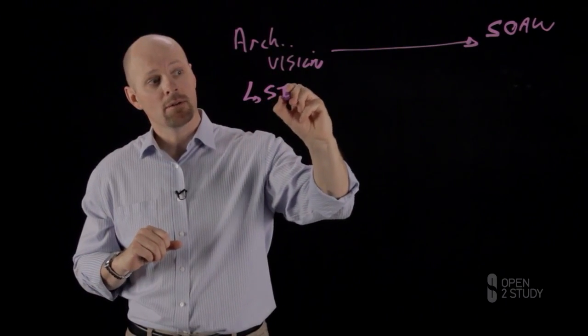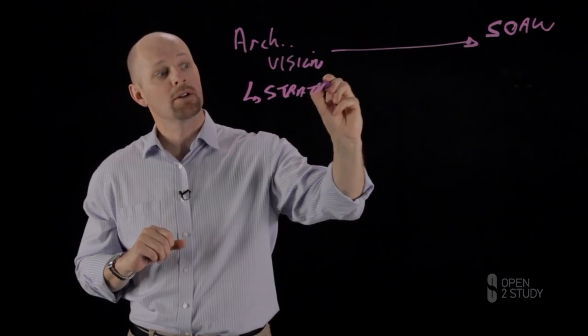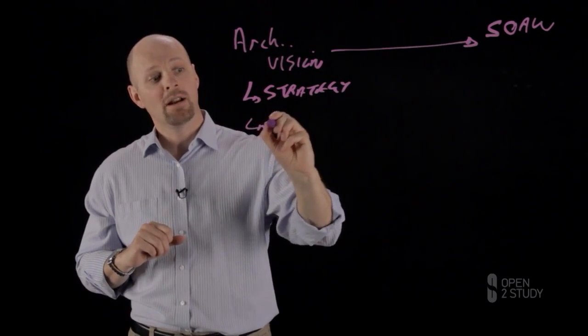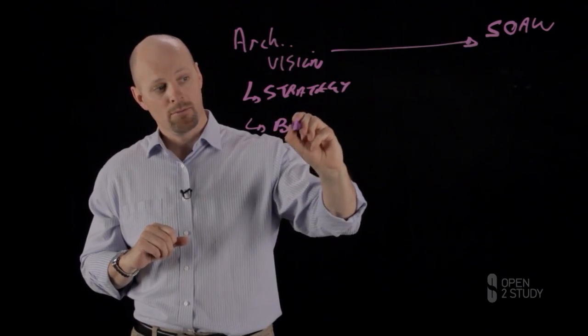Let's take a quick look at the breakdown of this. The architecture vision really looks at the strategies—what's the strategy of the organization, what am I trying to do through this iteration, what am I trying to achieve?